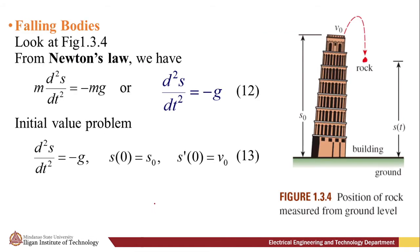Next, we have falling bodies. To construct a mathematical model of the motion of a body moving in a force field, one often starts with Newton's second law of motion. Recall from elementary physics that Newton's first law of motion states that a body will remain at rest or will continue to move with a constant velocity unless acted on by an external force. In each case, this is equivalent to saying that when the sum of forces F = ΣF_k, the net resultant force acting on the body is zero, then the acceleration a of the body is zero. Newton's second law of motion indicates that when the net force acting on the body is not zero, then the net force is proportional to the acceleration a, or more precisely, F = ma, where m is the mass of the body.